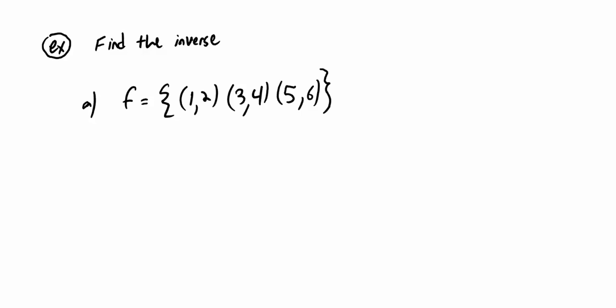In this example, let's find the inverse. How do you find the inverse of a function given as a finite set of ordered pairs? You just switch the x and y values around — switch all the ordered pairs. The domain of F is the set of first coordinates: {1, 3, 5}. The range of F is the set of second coordinates: {2, 4, 6}.